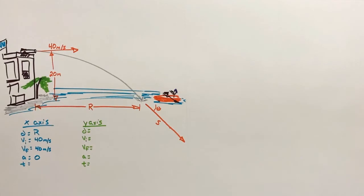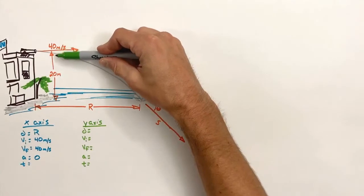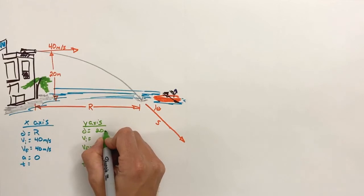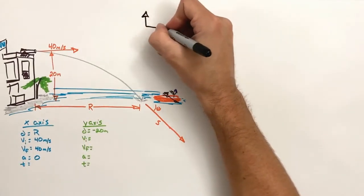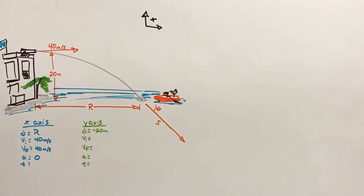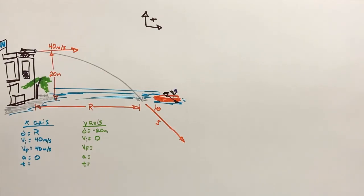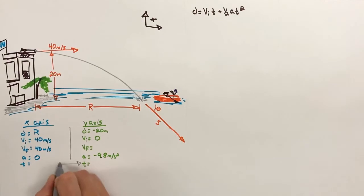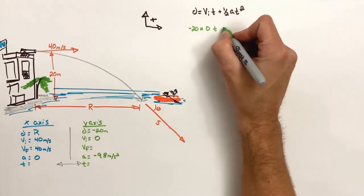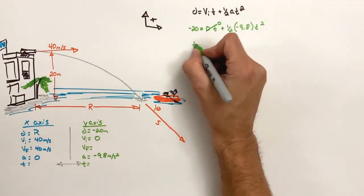The only way to find the horizontal range is to look in the y-axis. The shell is going to move from the top of the fortress down to the waterline — a displacement of 20 meters downward, which is negative. There's no initial vertical velocity. However, because the acceleration due to gravity is 9.8 meters per second squared downward, the cannon shell will accelerate downward as it travels through the air. We're going to use the kinematic equations, keeping our values from the x-axis separated from our values in the y-axis. Plugging our values exclusively from the y-axis into the displacement equation, we find the time it takes the shell to reach the water is two seconds.